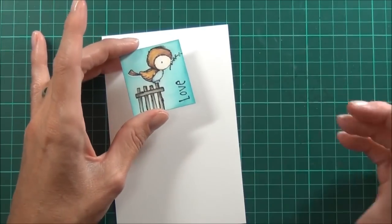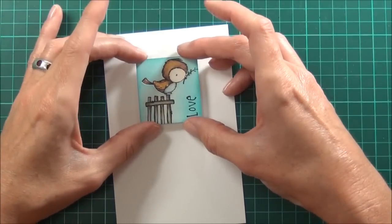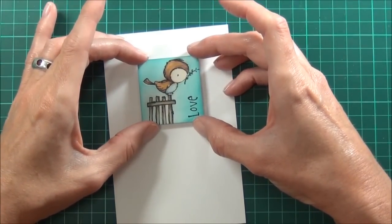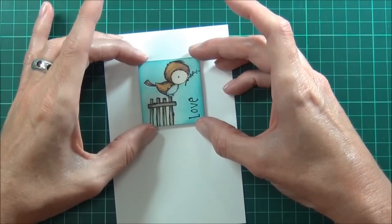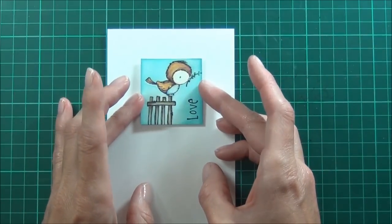Okay, so my finished card size is 15 by 9.5 centimeters. I'll put some foam tape on the back of my little image and I'm just going to place it in the center, just up to the top of the card there.